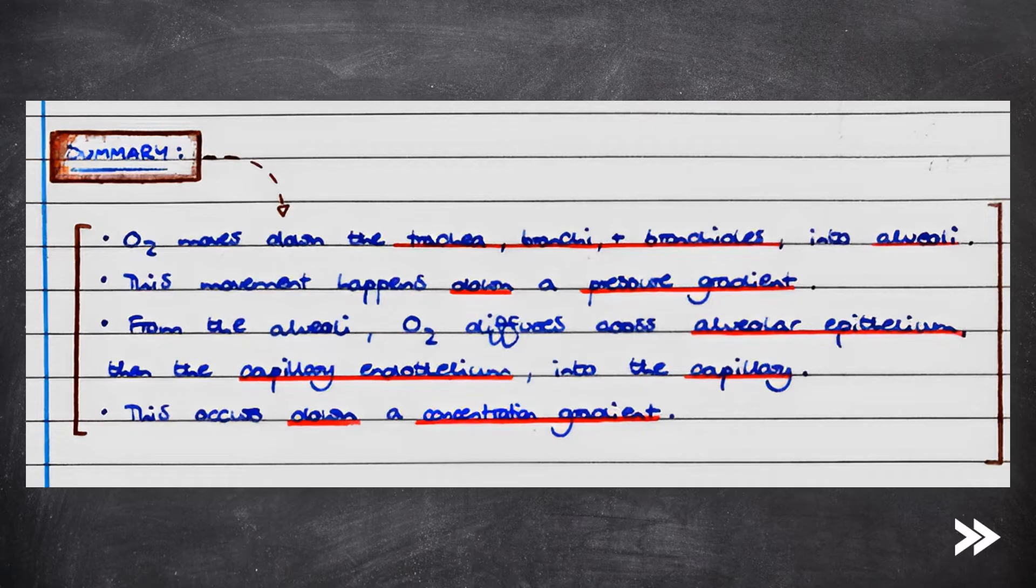So, in summary, oxygen moves down the trachea, bronchi, bronchioles, into the alveoli. This movement happens down a pressure gradient. From the alveoli, oxygen diffuses across the alveolar epithelium, then the capillary endothelium, and into the blood capillary. This occurs down a concentration gradient. Note the difference: concentration gradient versus pressure gradient.